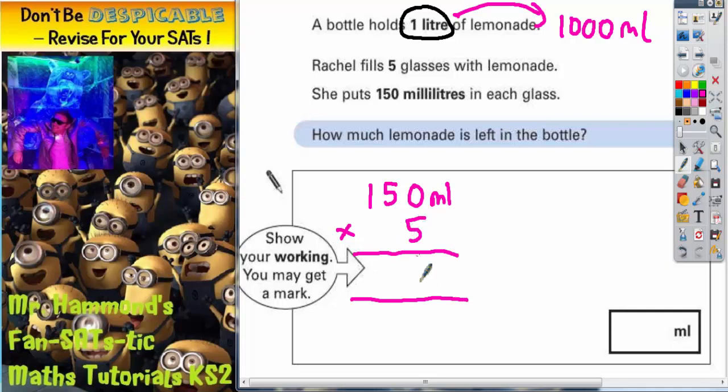Five lots of zero is zero. Five lots of five is 25. Put the five in, carry the two. And five lots of one is five plus that two is seven. Don't forget the units. Very important to put your units here, particularly as they were talking different units in the question. So this is milliliters. 150 milliliters times five is 750 milliliters.